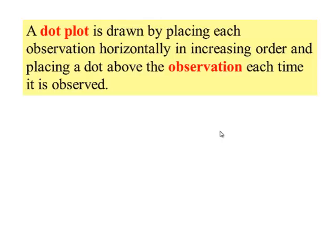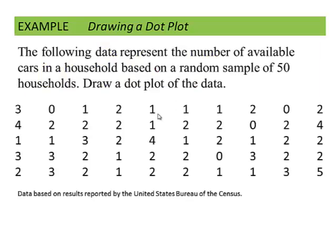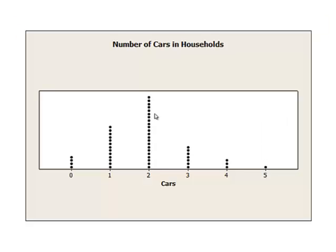A dot plot is drawn by placing each observation horizontally in increasing order and placing a dot above the observation for each time it's observed. For example, this is the number of available cars in a household based upon a random sample of 50 households. And this is what the dot plot would look like.